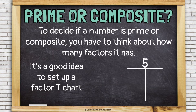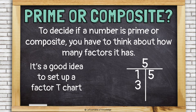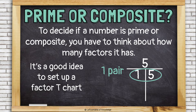Now let's look at 5. I have the freebie factor pair: 1 times 5. Let's think about 2 — is 2 times anything 5? No. 3 times anything? No. 4 times anything? No. 5 is already on my T-chart. So these are the only factors of 5. It only has one factor pair, and that makes it a prime number.